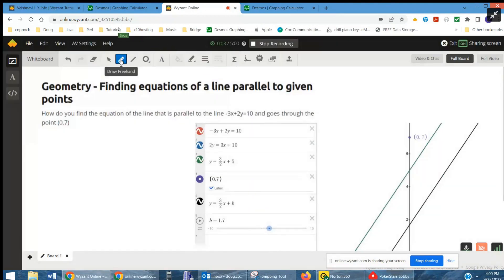Okay, the key to this problem is understanding that parallel lines have the same slope. Now here is the original equation along with two other versions that are all equivalent.